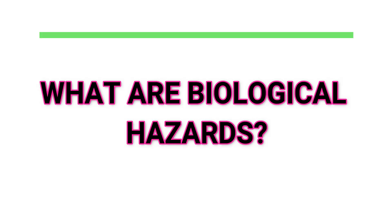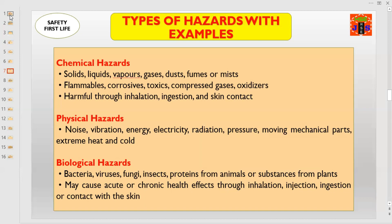What are biological hazards and what are the examples of biological hazards? Bacteria, viruses, fungi, insects, proteins from animals, or substances from plants may cause acute or chronic health effects through inhalation, ingestion, or contact with the skin.